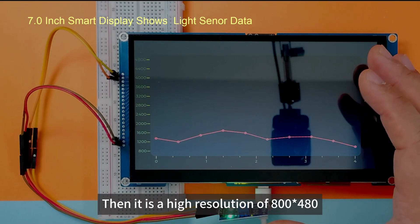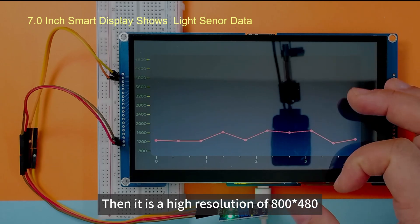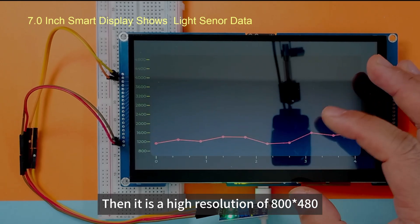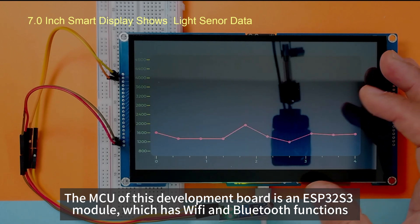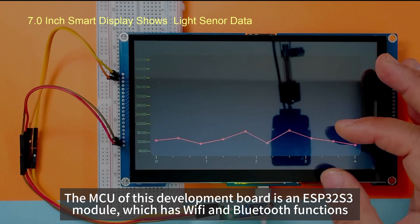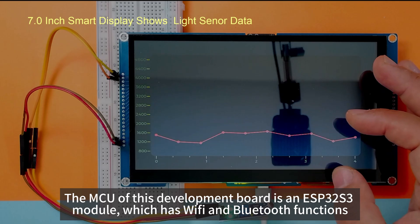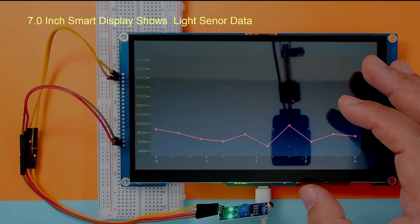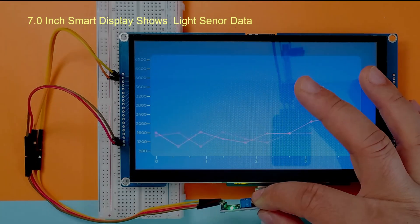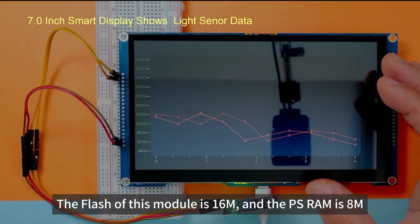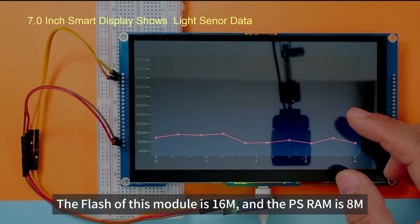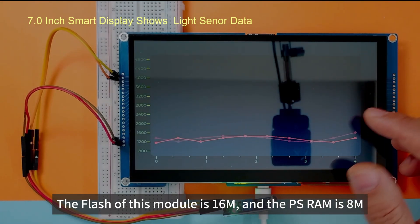Then it is a high resolution of 800 by 480. The MCU of this development board is an ESP32-S3 module which has Wi-Fi and Bluetooth functions. The flash of this module is 16M and the PSRAM is 8M.